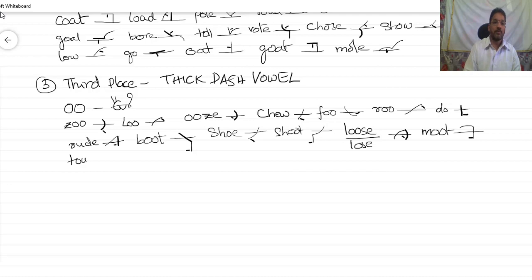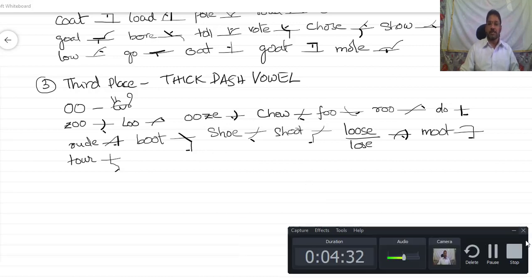Tour. T, tour. That's it. Comfortable? So third place Thick Dash Ovals, we finished. We will meet in the next video. If you have dictation, you will be able to practice.